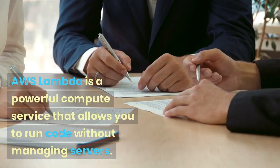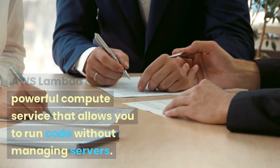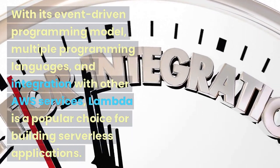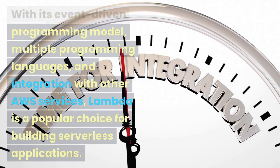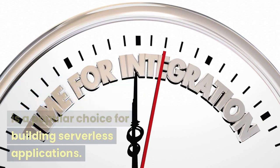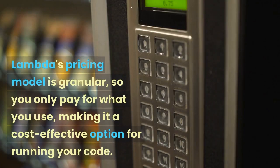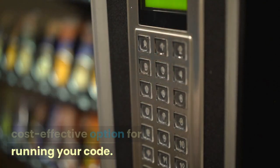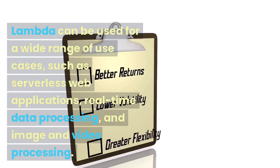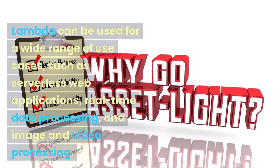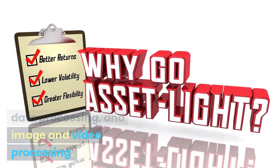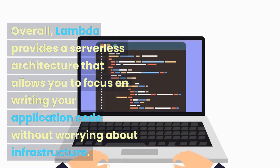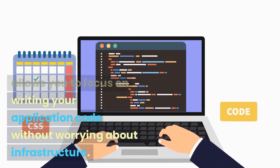Conclusion: AWS Lambda is a powerful compute service that allows you to run code without managing servers. With its event-driven programming model, multiple programming languages, and integration with other AWS services, Lambda is a popular choice for building serverless applications. Lambda's pricing model is granular, so you only pay for what you use, making it a cost-effective option. Lambda can be used for a wide range of use cases, such as serverless web applications, real-time data processing, and image and video processing. Overall, Lambda provides a serverless architecture that allows you to focus on writing your application code without worrying about infrastructure.